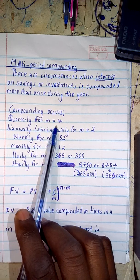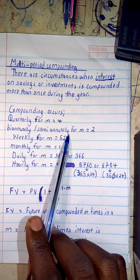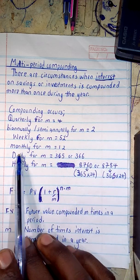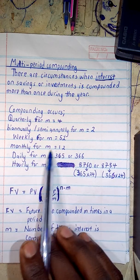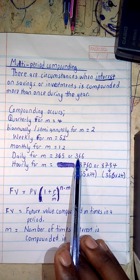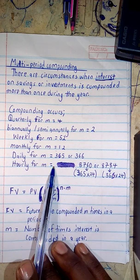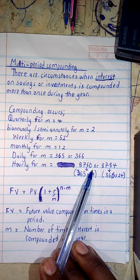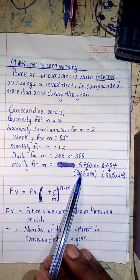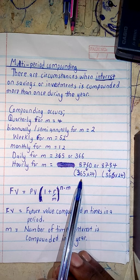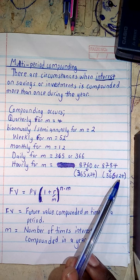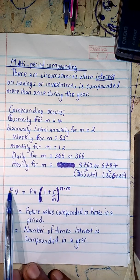Compounding can occur quarterly, where M equals 4; semi-annually, where M equals 2; weekly, where M equals 52; monthly, where M equals 12; daily, where M equals 365 or 366 days; and hourly, where M equals 8,760 or 8,784 hours — calculated by multiplying the number of days by 24.